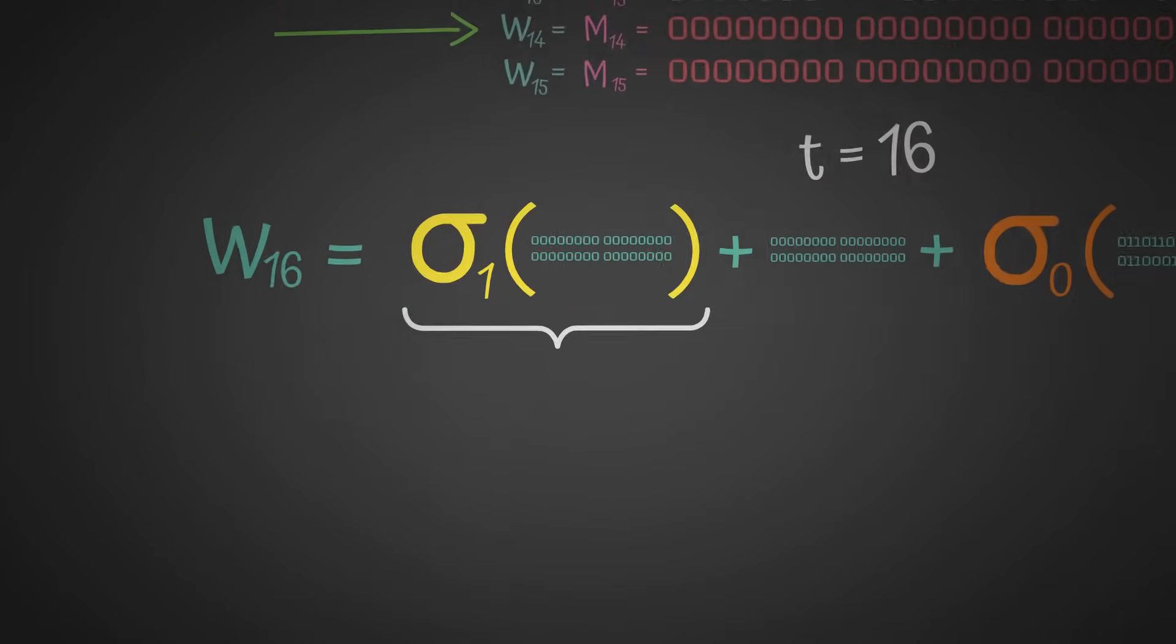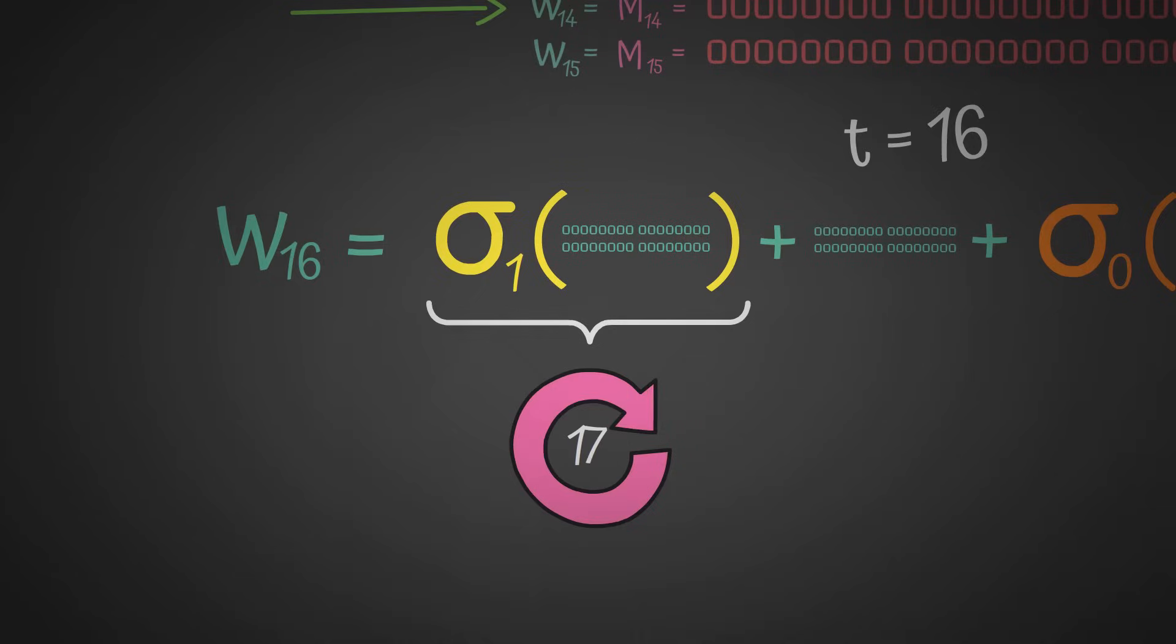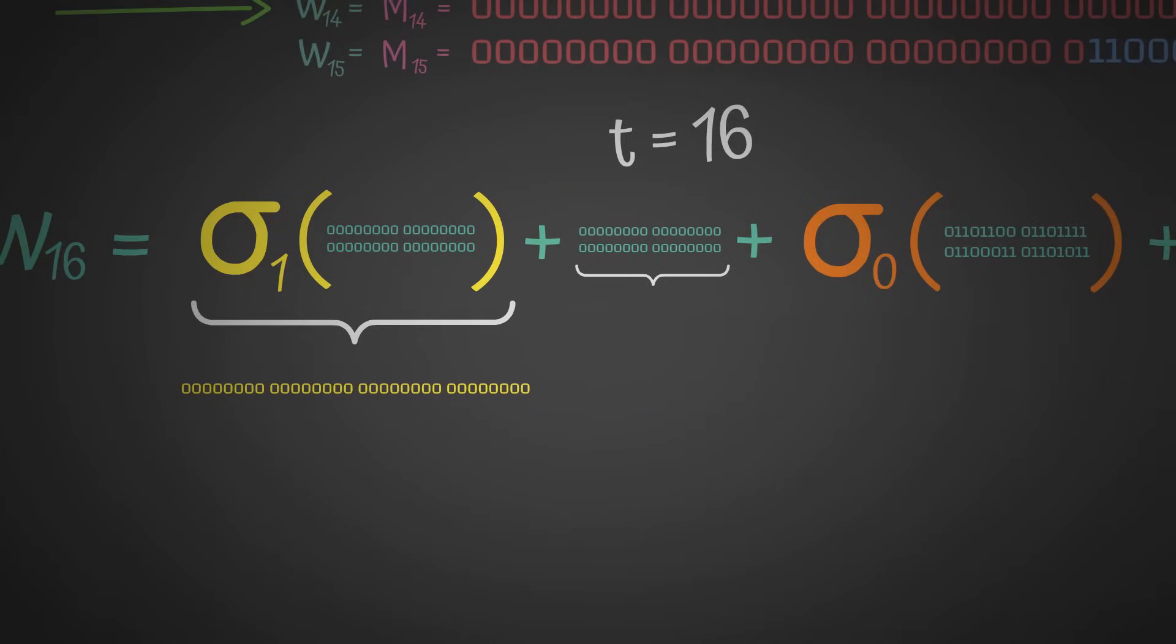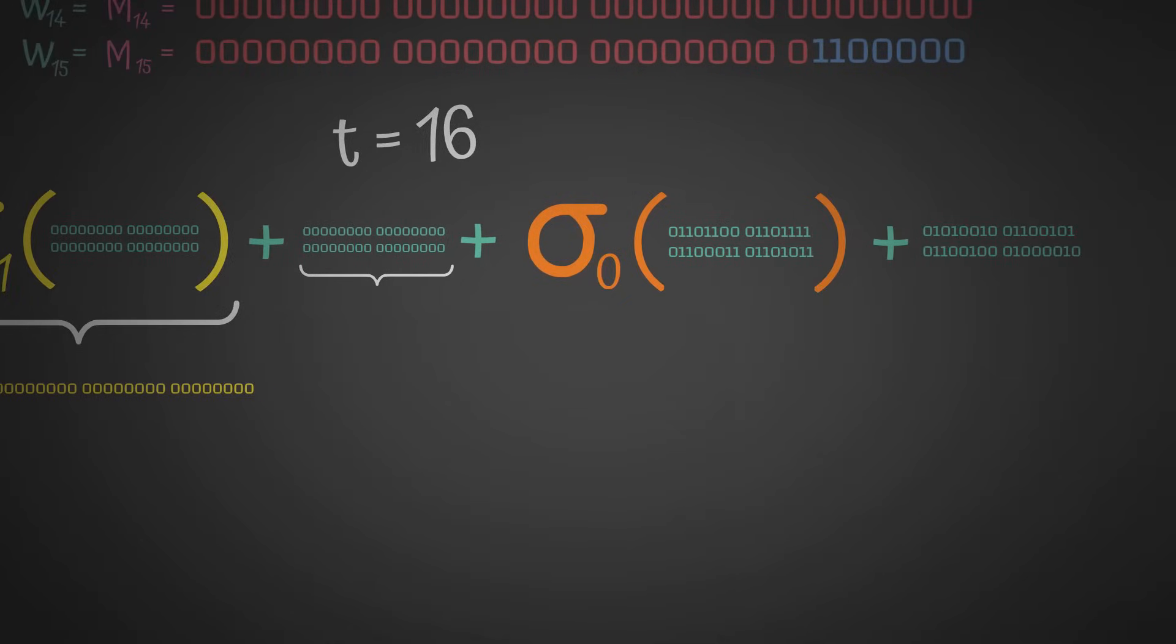Sigma 1 of all 0s. If we do a right rotation of 17, then a right rotation of 19, then a right shift of 10, and then add these bitwise modulo 2, we not surprisingly get all 0s. We add to that another load of all 0s.